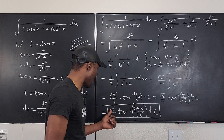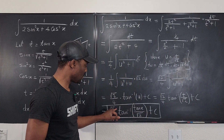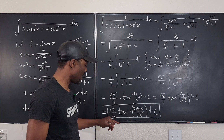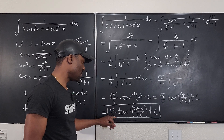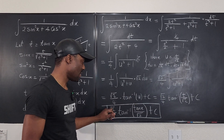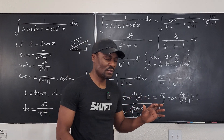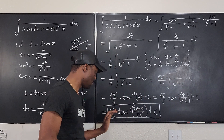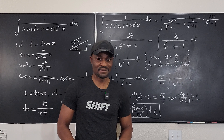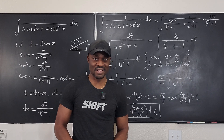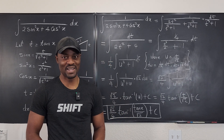You can also rewrite square root of 2 over 4 by multiplying top and bottom by square root of 2 to get 1 over 2 root 2. Never stop learning — those who stopped learning have stopped living. Bye-bye.